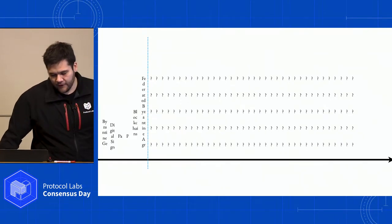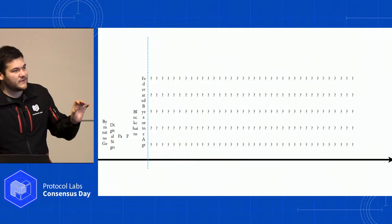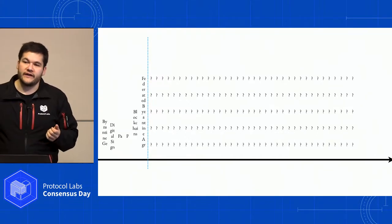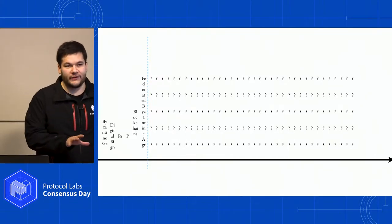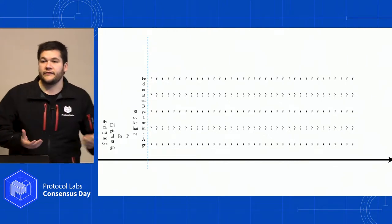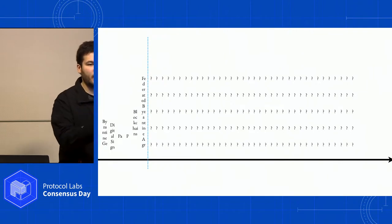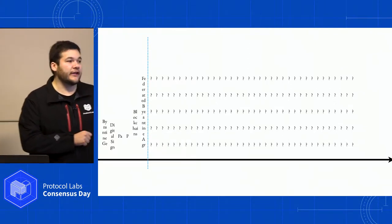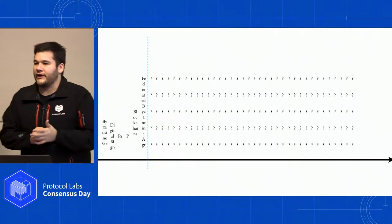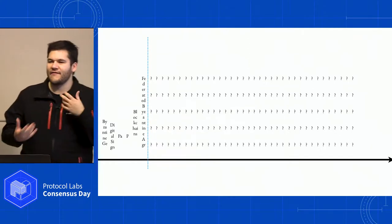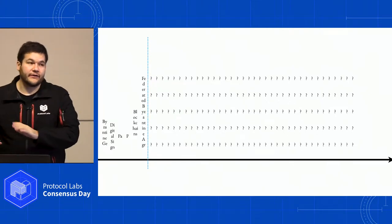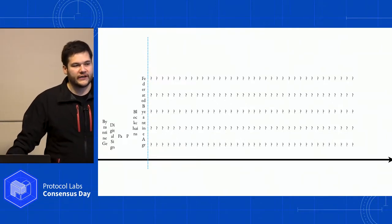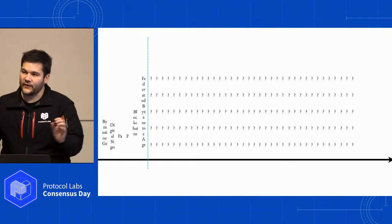One area is how consensus protocols will mix with other ways of getting convergent states that also fit how real-world applications work today. We use consensus in financial systems requiring agreement and in back-end database systems. But on the client side in mobile applications, we're starting to use things like CRDTs that do eventually consistent things, because the security requirements are very different. So how will these two systems end up converging?